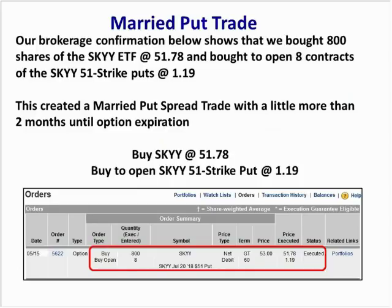Here's an example of a married put trade we took last month. We bought 800 shares of SKYY at $51.78 — here's our brokerage statement. At the same time, we bought to open eight of the SKYY 51 strike puts at $1.19. So we bought the ETF at $51.78 and bought the 51 puts at $1.19. That created a married put spread trade with a little more than two months until expiration.